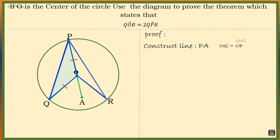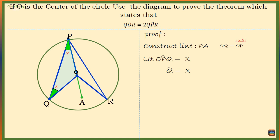Now suppose the size of angle OPQ is X. That means angle OQP is also of size X. These two are the base angles of isosceles triangle POQ, and we know that in any isosceles triangle the base angles are equal. At the center of the circle, angle AOQ is equal to 2X.